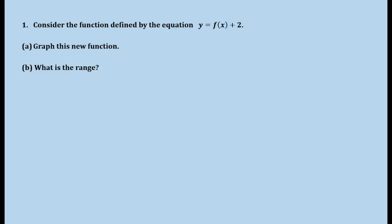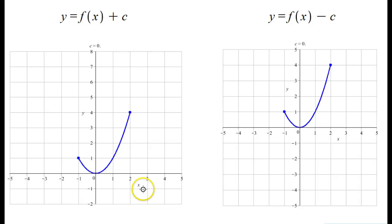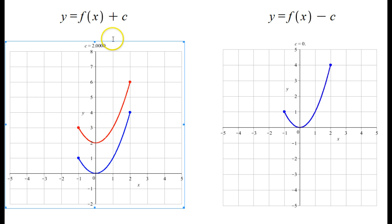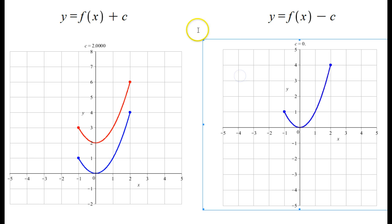Now we're going to look at a particular case of what happens when we add a given number to the function. What happens to the graph of y = f(x) + 2? What is the range of this function? For the graph, we're going to look at an animation and watch the parameter c as we change through here. As c varies between 0 and 2, we see the graph is shifted up 2 units. We're just taking the output and adding a particular number onto it, so the graph is being moved vertically. Likewise, if we subtracted 2, the entire graph would be shifted down 2 units.